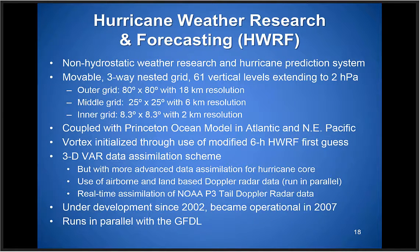We also have the HWARF model — NCEP's non-hydrostatic hurricane forecast model. It also has a three-way nested grid with 61 vertical levels: outer grid at about 18 km resolution, middle grid at 6 km, and inner grid at 2 km. The model is coupled with the Princeton Ocean Model in both the Atlantic and Eastern Pacific. The vortex is initialized using a modified first-guess from the previous 6-hour HWARF forecast, and it also does data assimilation — particularly in the hurricane core. In real time, it can assimilate tail Doppler radar from the NOAA P3 and land-based Doppler radar data.